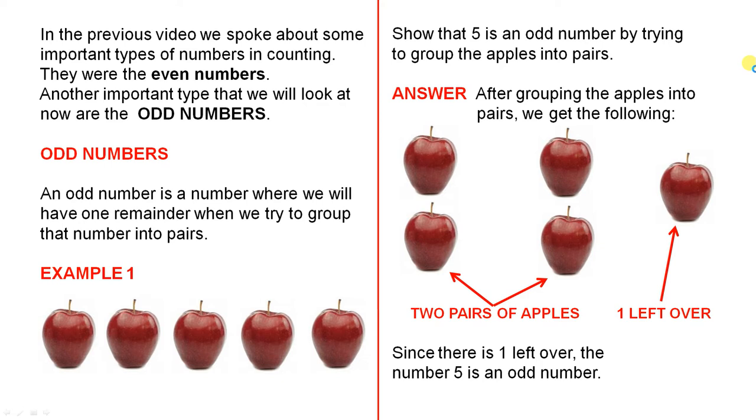In the previous video we spoke about some important types of numbers in counting. They were the even numbers. Another important type that we will look at now are the odd numbers.